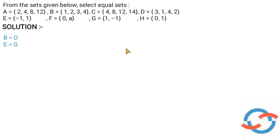If we have equal sets, B and D are equal, and E and G are equal. These are the answers. If you like this video, please like, share and subscribe. Thank you. Have a nice day.